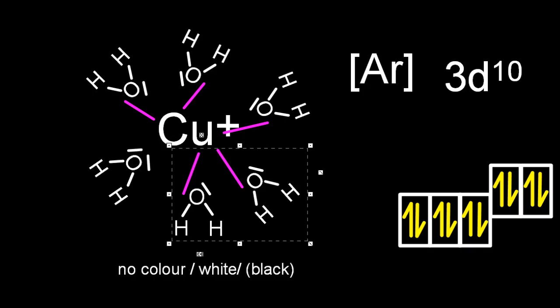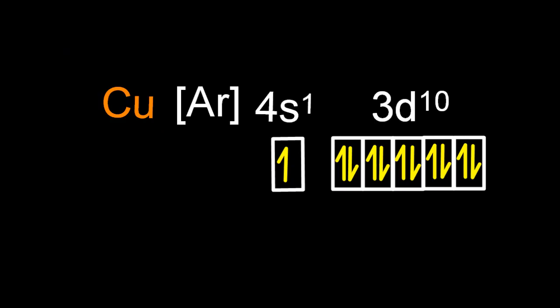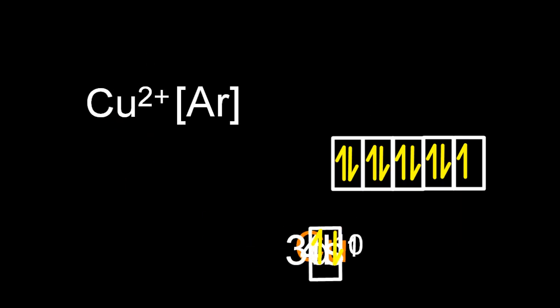Let's reset this little experiment. And there's copper again. I'm going to make it copper 2+, knocking off a couple of electrons there. Ah, now I have a partially filled d-orbital. And that's going to give me coloured complexes.